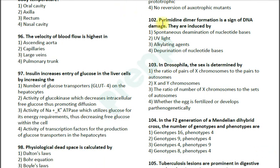Question number 102: Pyrimidine dimer formation is a sign of DNA damage. They are induced by — option 1: spontaneous deamination of nucleotide bases; option 2: UV light; option 3: alkylating agents; option 4: depurination of nucleotide bases. The correct answer is UV light. UV light induces the pyrimidine dimer, which is the thymine-thymine dimer.